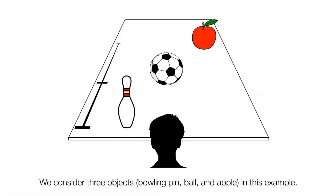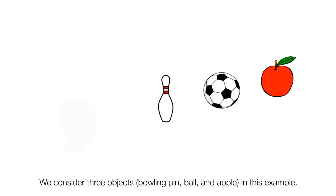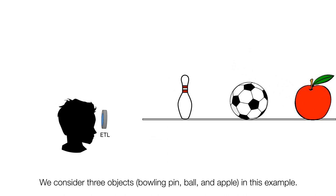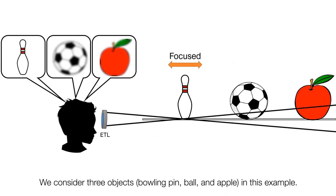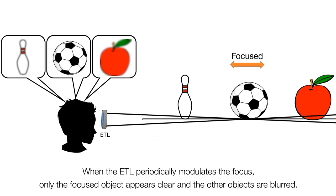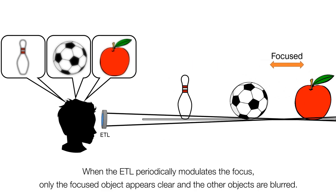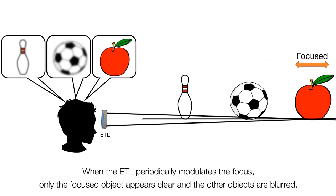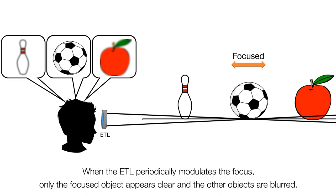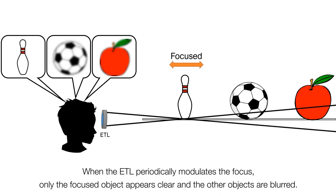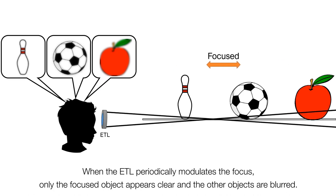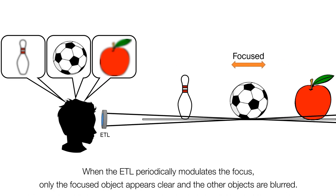We consider three objects: bowling pin, ball, and apple. In this example, when the ETL periodically modulates the focus, only the focused object appears clear and the other objects are blurred.